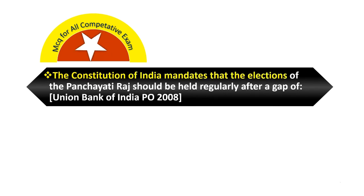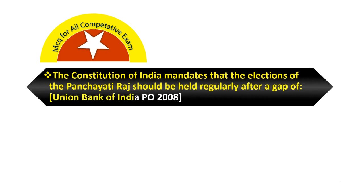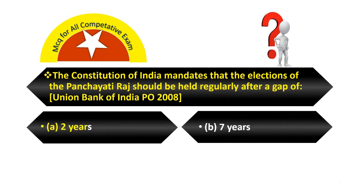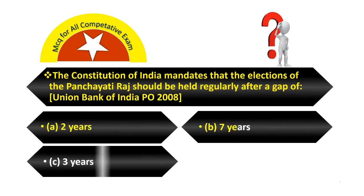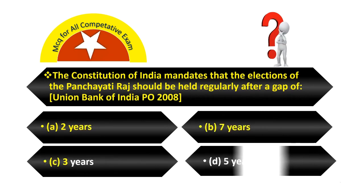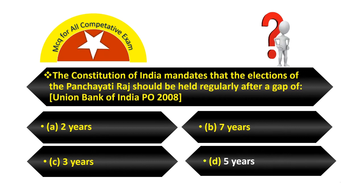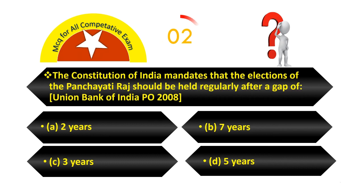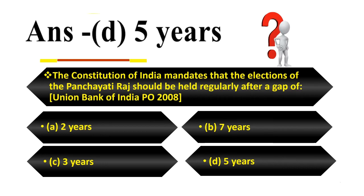The Constitution of India mandates that elections of the Panchayati Raj should be held regularly after a gap of: Option A, Two years. Option B, Seven years. Option C, Three years. Option D, Five years. Your answer is Five years.